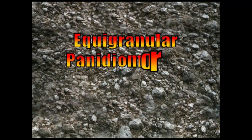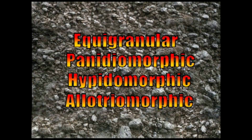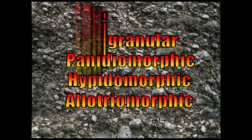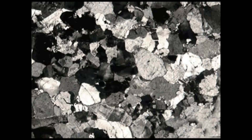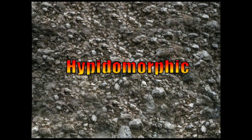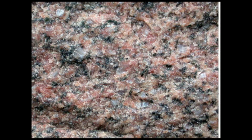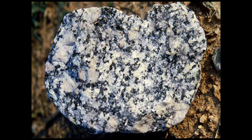Equi-granular rocks are subdivided into three categories: panidiomorphic, hippidiomorphic, and allotriomorphic. When the majority of crystals are euhedral in shape, the texture is known as panidiomorphic. When a rock is made up of subhedral minerals, it is known as hippidiomorphic texture — an example is granites.